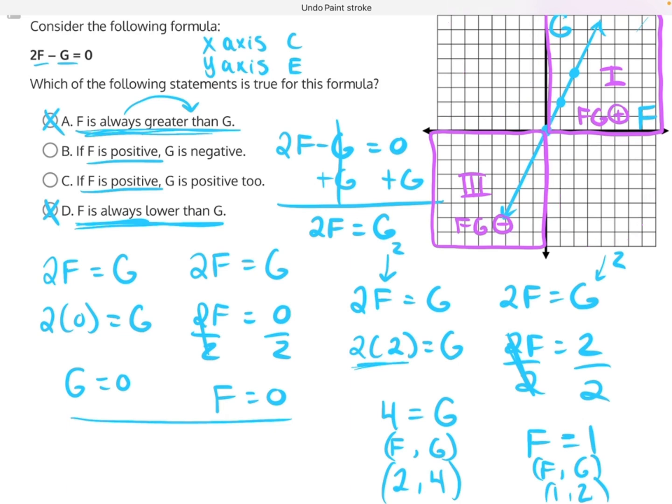And by process of elimination, that leaves answer choice C. If F is positive, G is positive too. And that's a true statement, because we have values in quadrant one, where F and G are both positive all the time. So C is our correct answer.